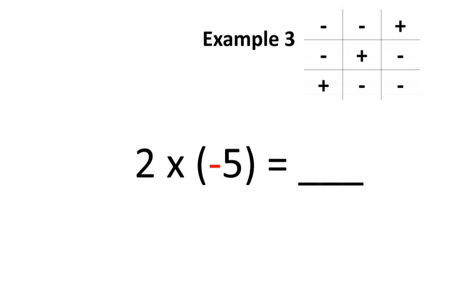In our third example, we want to find what positive 2 times negative 5 is equal to. Again, you'll notice a pair of brackets around the negative 5. Sometimes brackets are put around negative numbers, sometimes they aren't. Let's use our shortcut here. A positive number multiplied by a negative number should give you a negative number. Therefore, positive 2 times negative 5 is equal to negative 10.